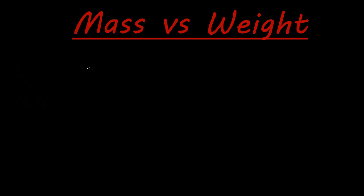So what's the difference between mass and weight? The mass of something is essentially how much matter an object has. So the mass is the matter or how much stuff is essentially in that object.